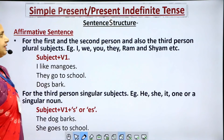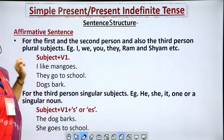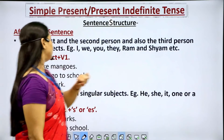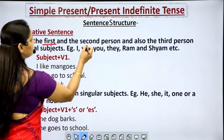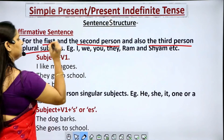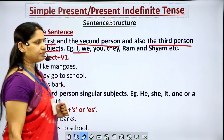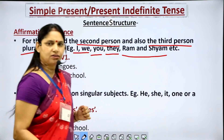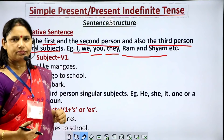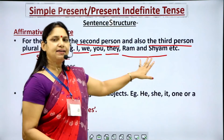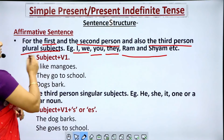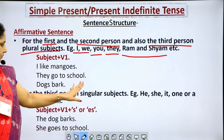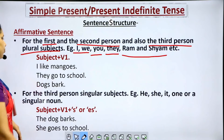Simple present, or the present indefinite tense — sentence structure. For affirmative sentences, for first and second person subjects and third person plural subjects (I, we, you, they, or nouns joined by 'and'), the rule is: subject plus V1. Examples: 'I like mangoes.' 'They go to school.' 'Dogs bark.' We have just used V1 with the subject.